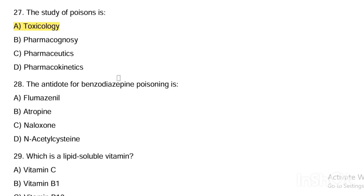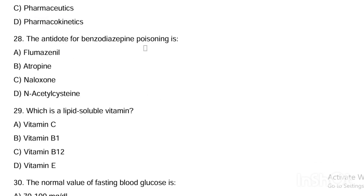Next question. The antidote for benzodiazepine poisoning is: Option A, flumazenil. Option B, atropine. Option C, naloxone. Option D, N-acetylcysteine. Answer: benzodiazepine poisoning antidote is Option A — flumazenil.